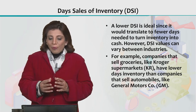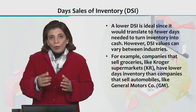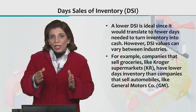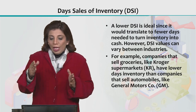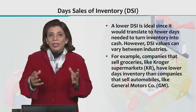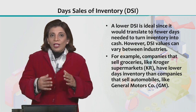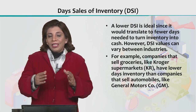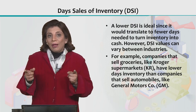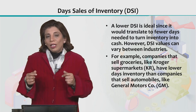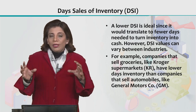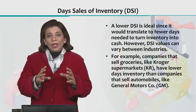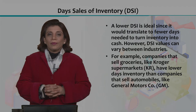For example, supermarkets sell materials within just a few days, so their DSI is very low. But in the automobile sector — take General Motors, for example — inventory of vehicles is maintained for a relatively longer time period. That is why we compare days sales of inventory values only within the same sector or industry, not across different industries.